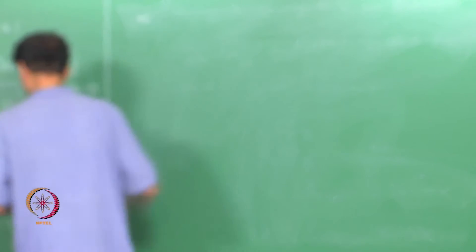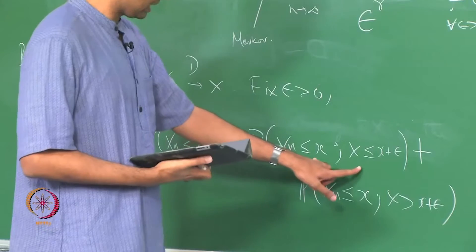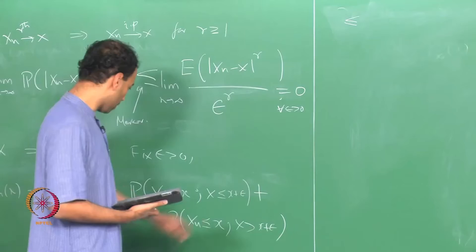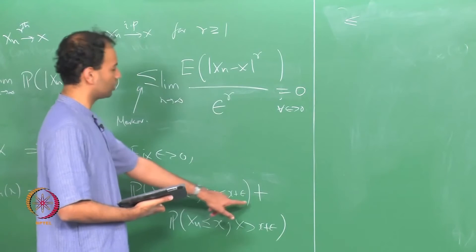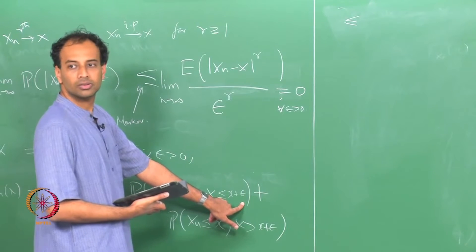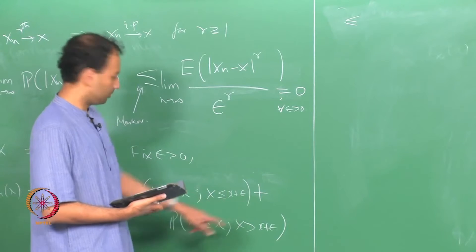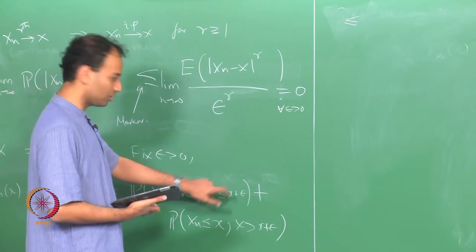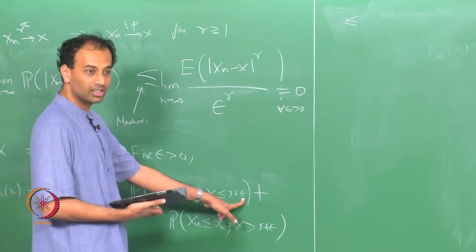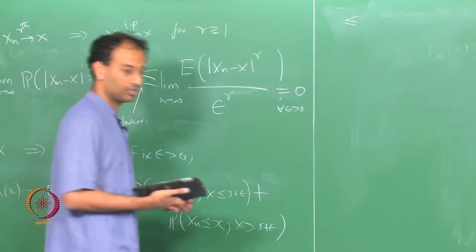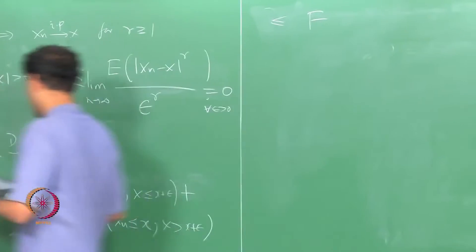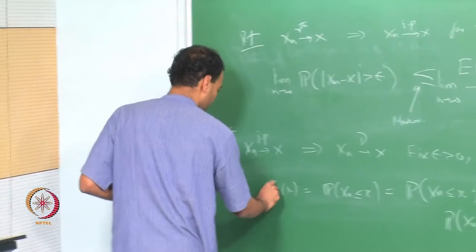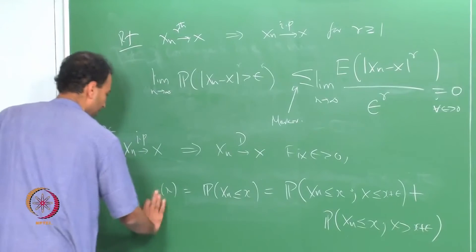This is less than or equal to — if you look at this event — the probability that X is less than or equal to X plus epsilon, because the intersection is less than or equal to the probability of only that event. So that is less than or equal to F(X plus epsilon).